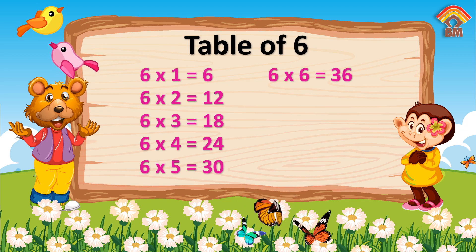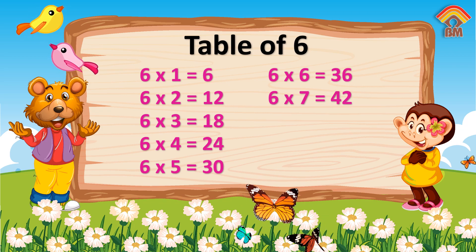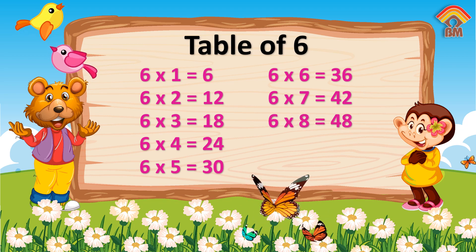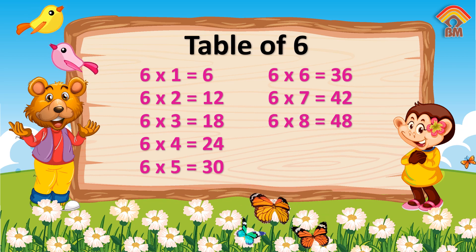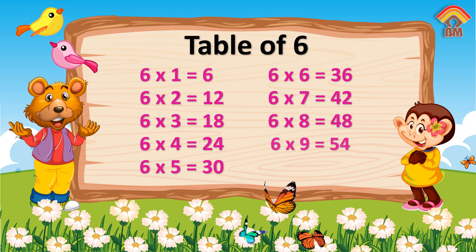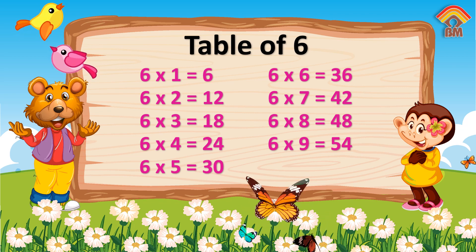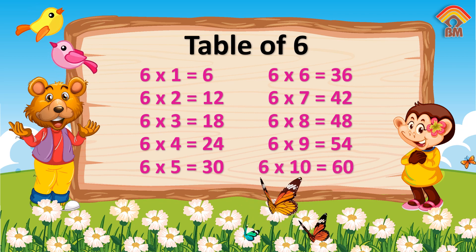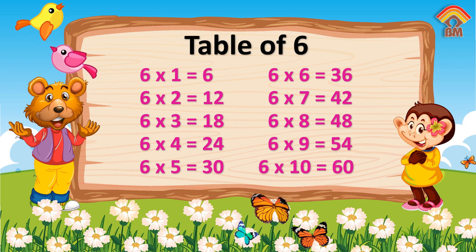Six sevens are forty-two. Six eights are forty-eight. Six nines are fifty-four. Six tens are sixty.